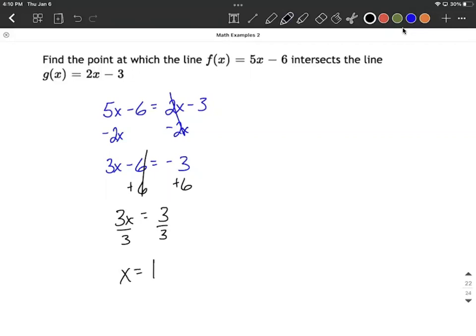So in this case, these are going to intersect at an x value of 1. But we need an entire ordered pair here. To get that point, what we want to do is substitute back in. We have our x value, but we need to plug it into either one of those original functions.